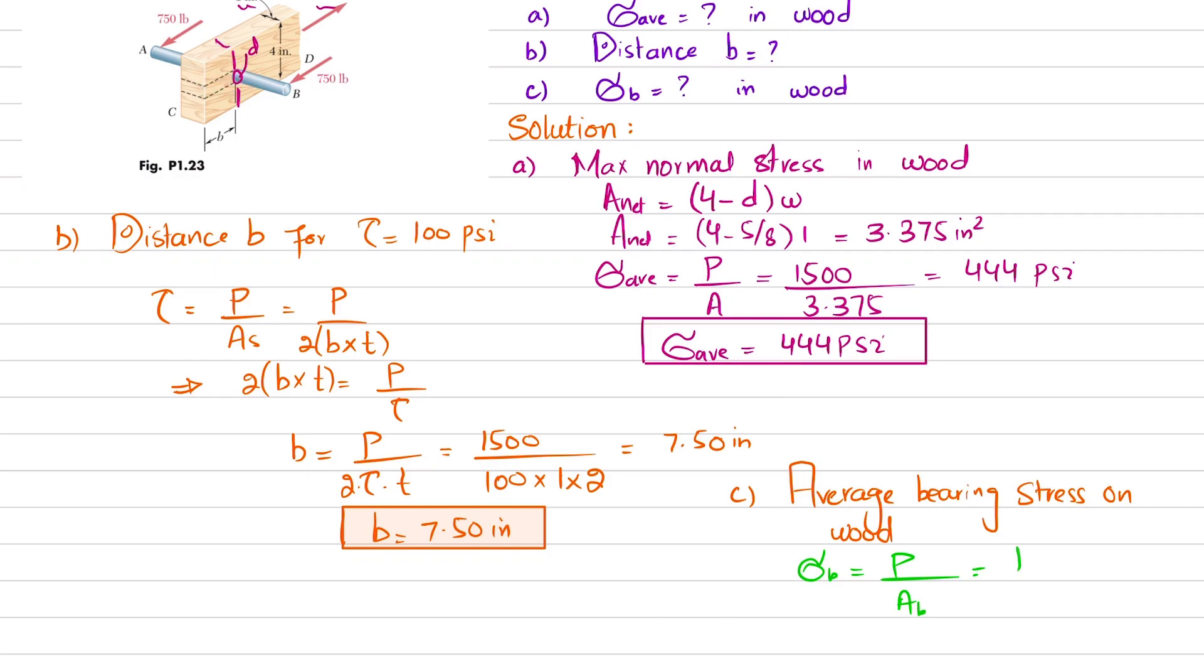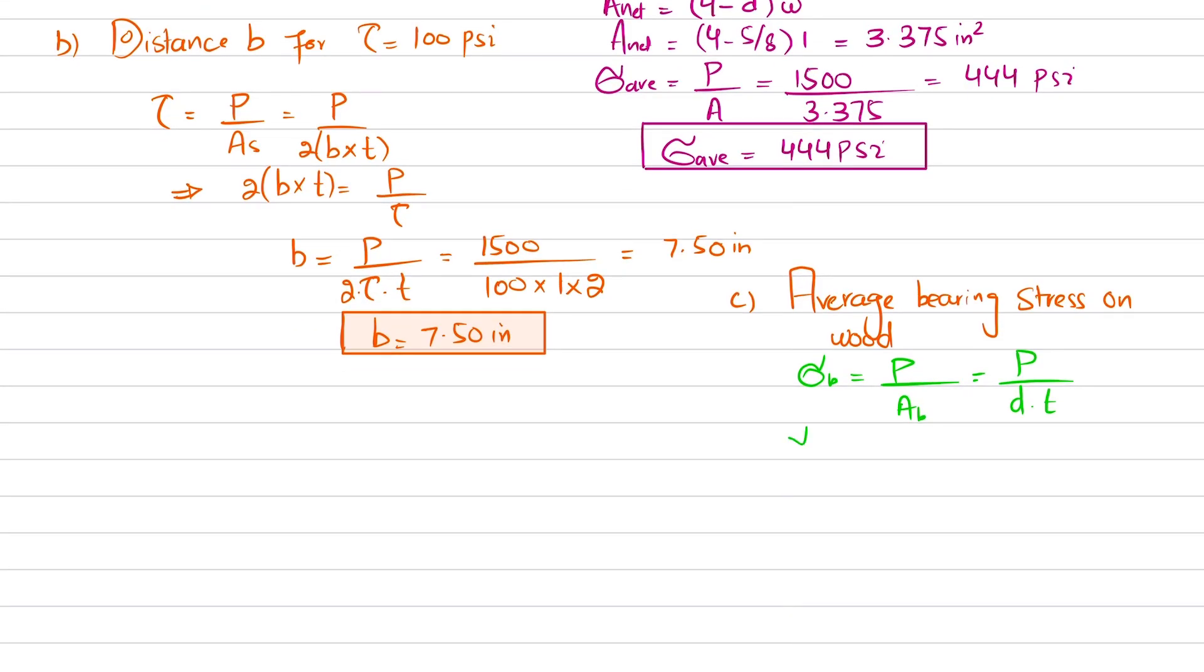We will write P divided by diameter into thickness T. You can just put the value: bearing stress equals load 1500 divided by diameter 5/8 inch and thickness 1 inch. When you calculate it, you will get bearing stress which comes out to be 2400 psi. And this is the answer of our third part.